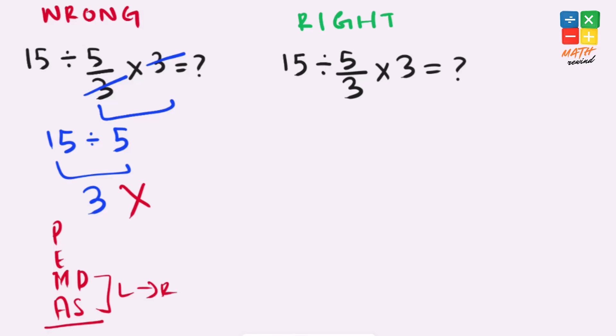So now let's rewind and solve this problem the right way. In this problem, we have division and multiplication operators available. They both have same priorities, so we must work from left to right. So we'll solve this left side first.